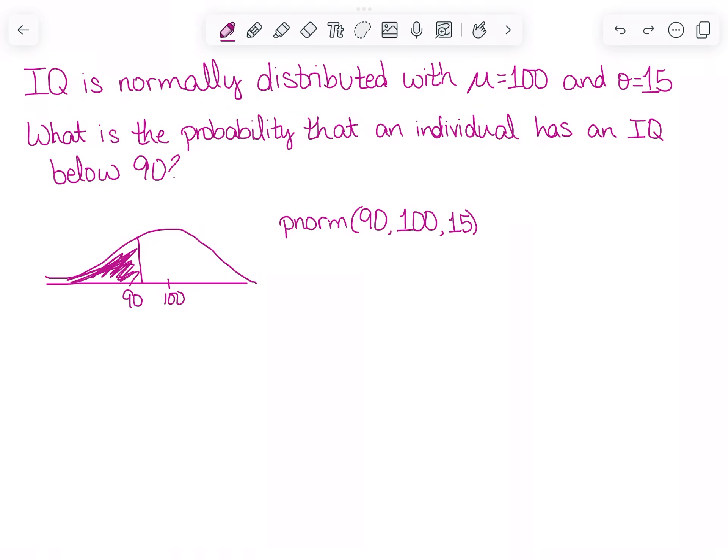In R, I would use the command pnorm, comma 90, comma 100, comma 15. I want the probability that it's below 90, my mean is 100, and my standard deviation is 15.